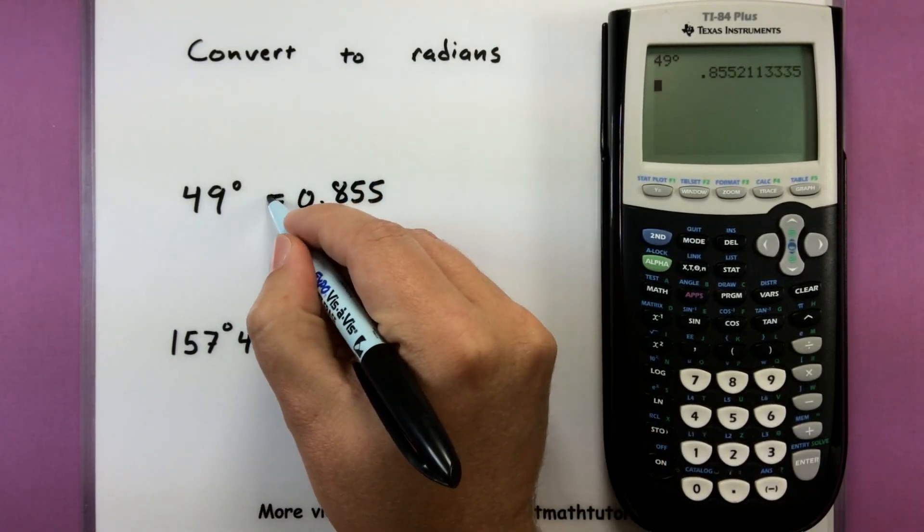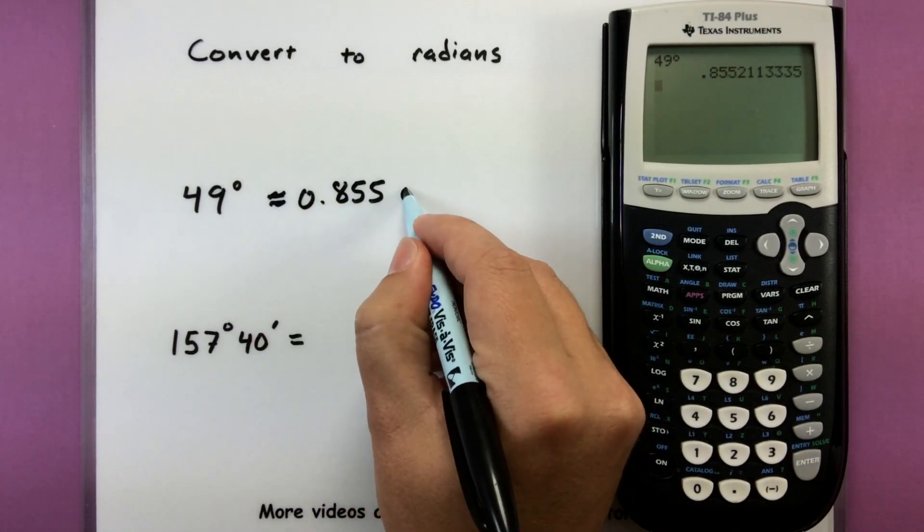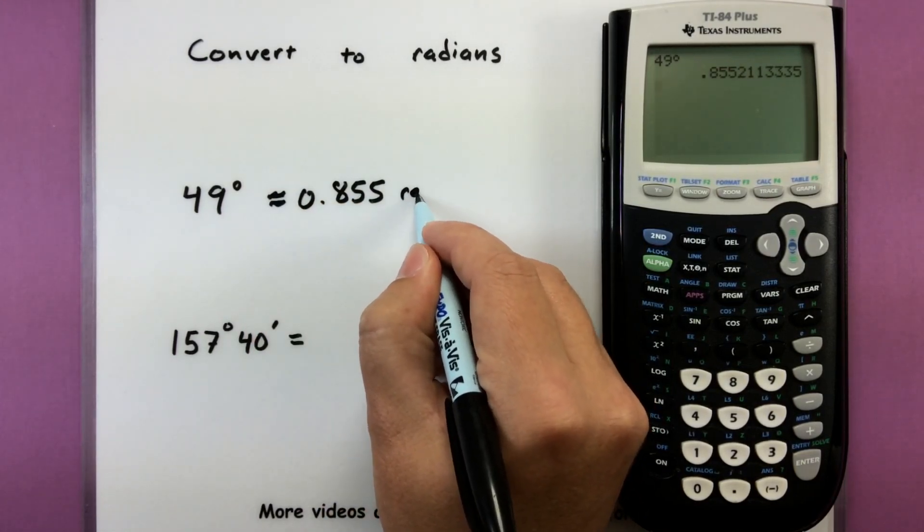Let's go ahead and round it there. So about 0.855 radians.